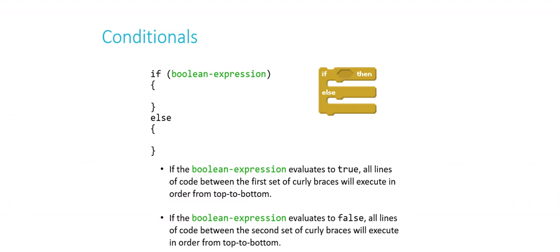And that's analogous to what you see here for C. If Boolean expression, do the stuff between the first set of curly braces. Else, do the stuff between the second set of curly braces. So if the Boolean expression is true, we'll do whatever's between the first set. If the Boolean expression is false, that would trigger the else. And we would do whatever is in the second set of curly braces. Again, top to bottom, all the lines in between the braces.